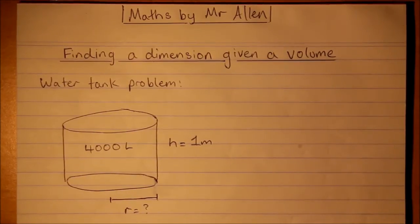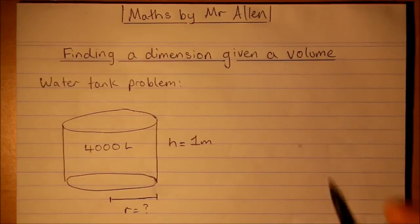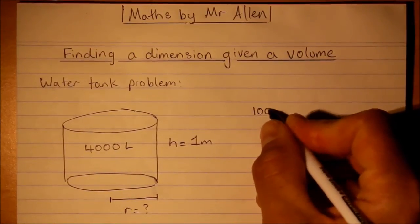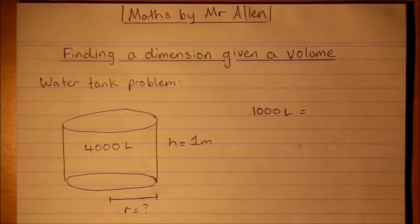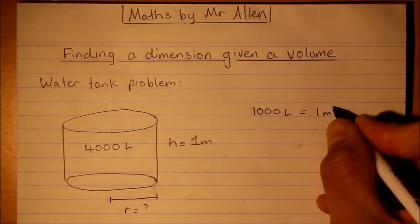Now the first challenge here is to convert that capacity into a volume. And if you think back to your conversions you should know that 1,000 litres is equal to how much? 1 metre cubed.